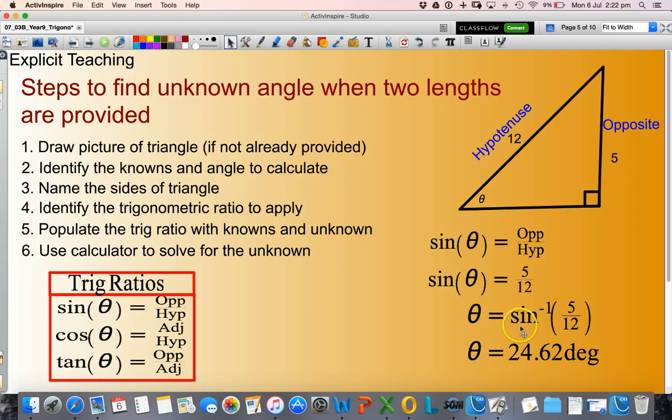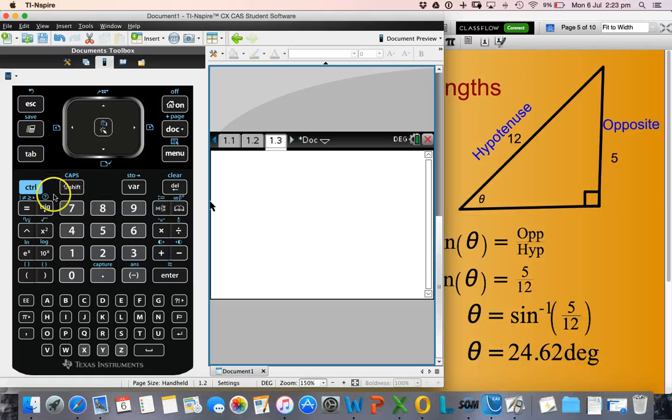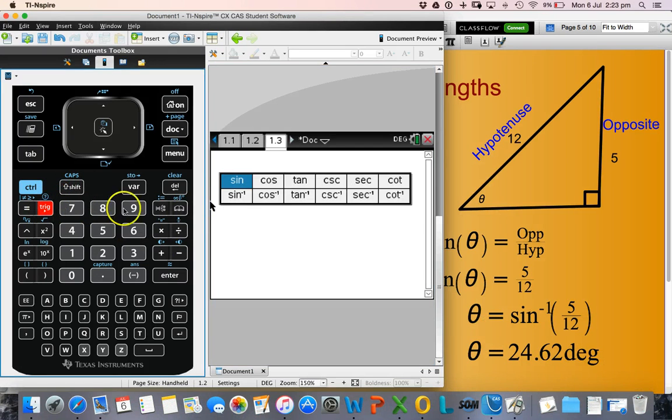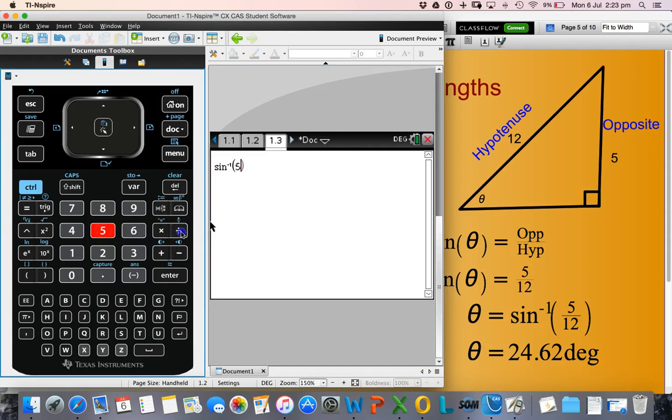And the last step is I just need to use my calculator to solve for this unknown theta. So I will actually be applying the inverse sine operation. What I want to do is remove this sine from this side and the opposite to applying a sine operation is the inverse sine. So I'll show you how I can do that on my calculator. I just go to my trig function, sine, and I want to calculate 5 divided by 12.